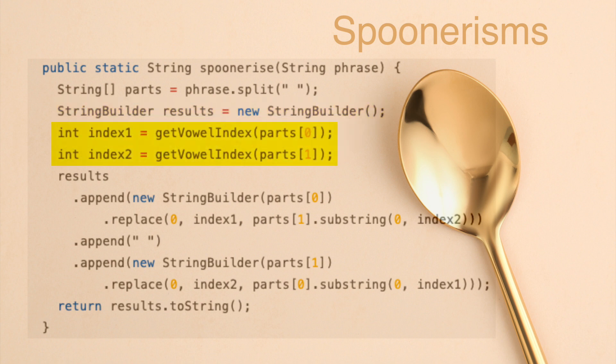Next, we define two integer variables, index1 and index2, and assign to each the results of the call to the helper method getVowelIndex, passing it each part from our parts array.